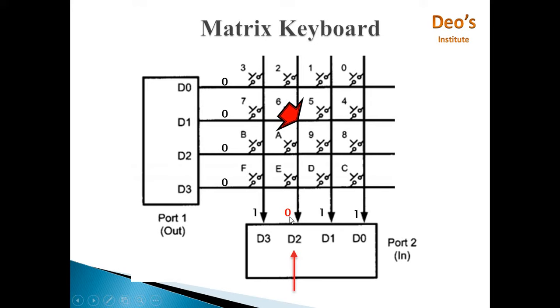So D2 will become 0. We will be continuously reading port 2 and we identify that there is 0 on D2 line of port 2. So port 2 reads as 1 0 1 1.